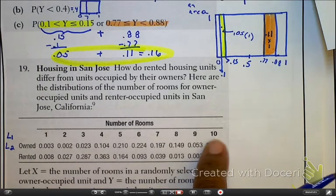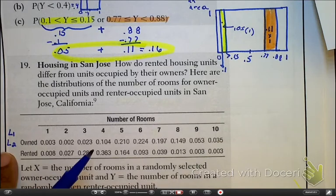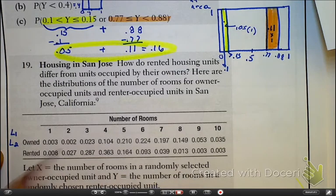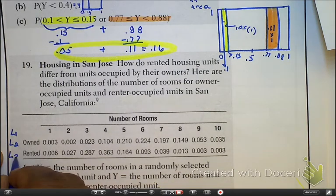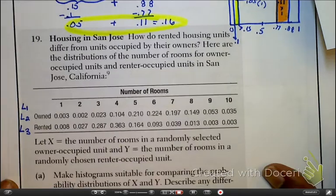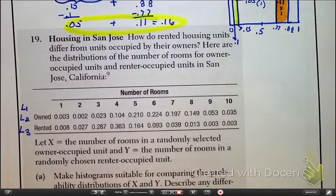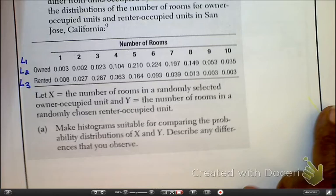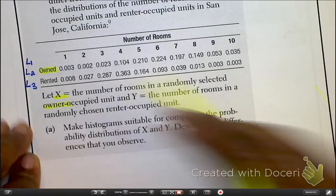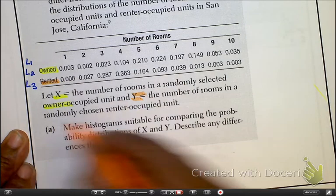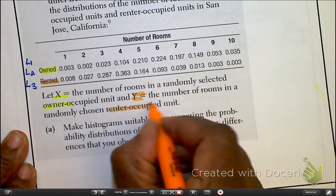My number is 1, 2, 3, 4, 5, 6, 7, 8, 9, 10 in my L1. My L2, I'm going to put in the probability of owning. And I'm going to put in my L3, the probability of renting. They've said to us, as we look at this, that our variables that represent here, owned is represented by X, and rented is represented by Y, renter-occupied unit.